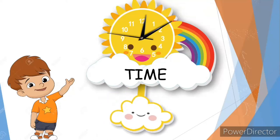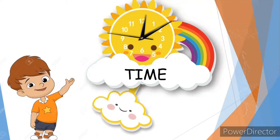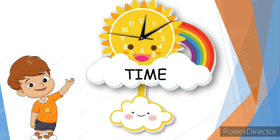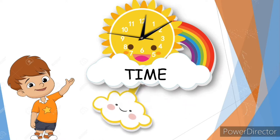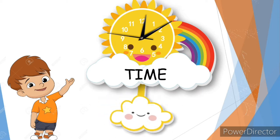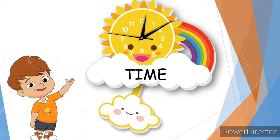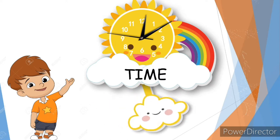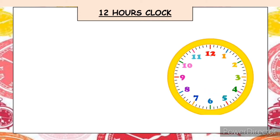Hello everyone, welcome or welcome back to my channel. Today I will be showing you a beautiful PPT with interesting animations. Without further ado, let's get started. There are two types of clock: 12-hour clock and 24-hour clock, but today we will learn only about the 12-hour clock. The dial of the 12-hour clock is divided into 12 equal parts and numbers are written from 1 to 12.